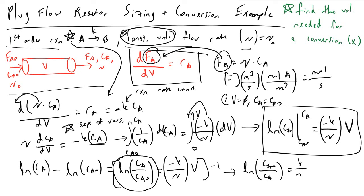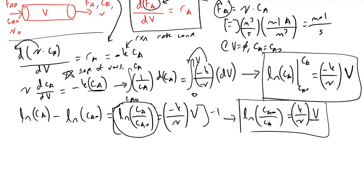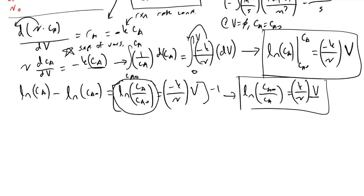We're getting close to the end here in terms of answering our question, which is find the volume of our reactor that we are going to need for a particular conversion of X. The discussion we'll have about conversion could be a whole lecture, but I don't want to make it one. For the sake of finishing this example, what we're going to say is that conversion is equal to X.